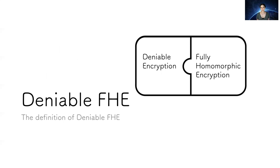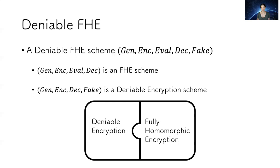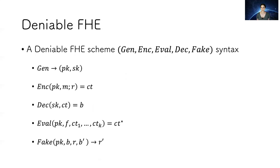Let's see the definition of a deniable FHE. A deniable FHE is both an FHE scheme and a deniable encryption scheme. The algorithms are: KeyGen, Encrypt, Evaluate, and Decrypt — this makes it an FHE scheme. And if we take KeyGen, Encrypt, and the Faking algorithm, this is a deniable encryption scheme. The Evaluate algorithm takes the public key, function F, k ciphertexts, and outputs a ciphertext. The Faking algorithm takes the public key, message, randomness, and a faking message, and outputs a faking randomness.